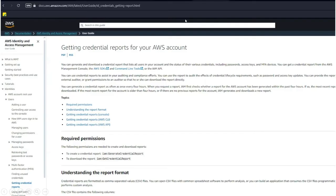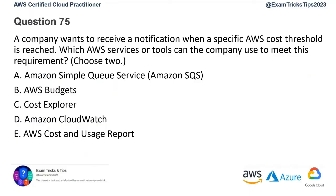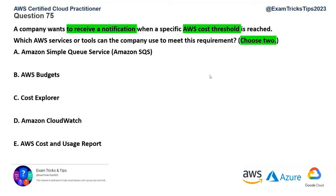Question number 75. A company wants to receive a notification when a specific AWS cost threshold is reached. Which AWS services or tools can the company use? Select two options. There are two requirements: you need a notification, and that notification needs to happen when a specific AWS cost threshold you've defined is reached. Let's use the elimination technique.